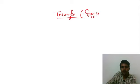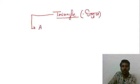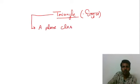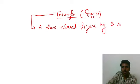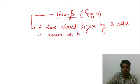First of all, let's discuss what is triangle. A plane, closed figure by three sides is known as triangle.